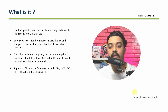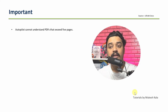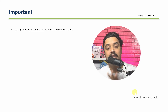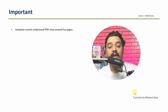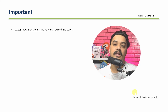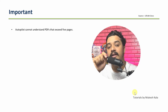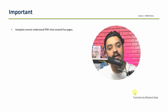Now there are some important points to understand as a developer. The first point: Autopilot cannot understand PDFs that exceed more than five pages. If you have a document exceeding five pages, Autopilot cannot fully understand it — for that we might need to use advanced features like context grounding, which we'll cover in upcoming videos. If you are directly uploading a PDF with more than five pages, it may not understand it.